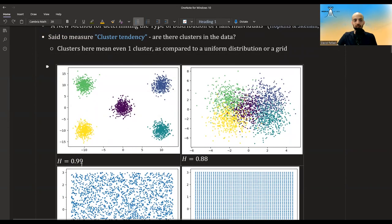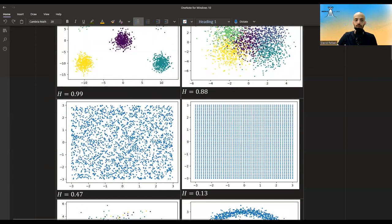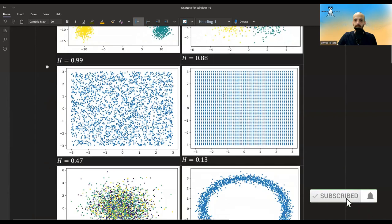So I want to show you the Hopkins statistic that I calculated on a bunch of two-dimensional data. Here where I have some data, it's obviously separated into five clusters, and I get a pretty high Hopkins statistic. It's a measure from zero to one. Here, the data is a bit less distinctly separated, I get a lower H. Here, the data is uniformly distributed, I get an H close to 0.5. And here, the data is in the form of a grid, and I get an H of 0.13.